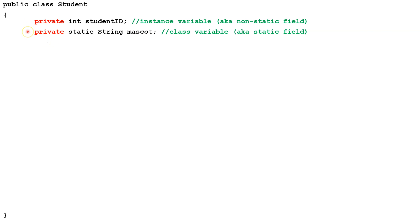These are marked private, and what that means is that we can access these fields inside the Student class, but we can't access them outside the Student class directly. We do this because it makes it harder to accidentally change the value. But it means we need to have an indirect way to access them from another class, and we do that using Getter and Setter methods.